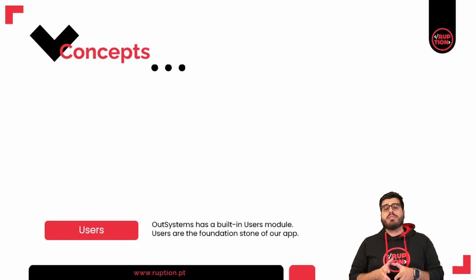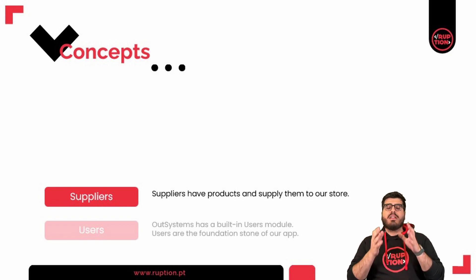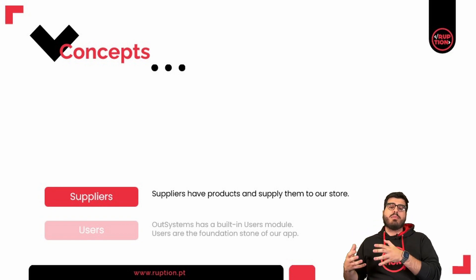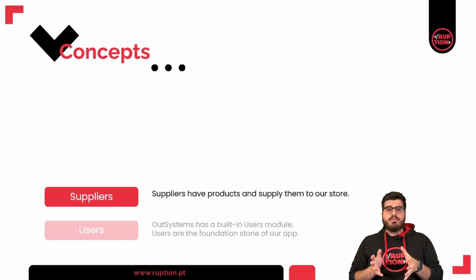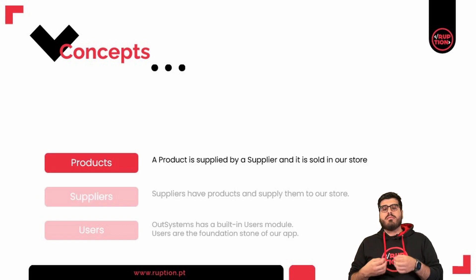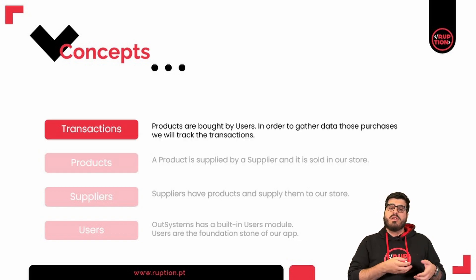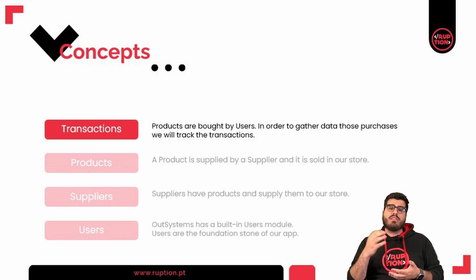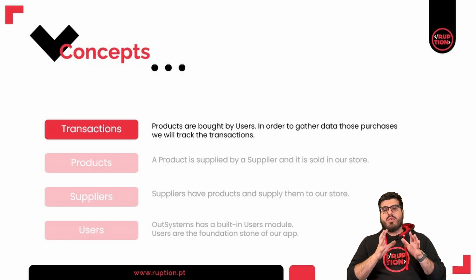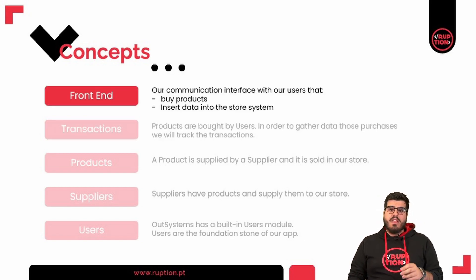Let's focus on products, suppliers, and transactions. A product is something we are going to sell in our store, and these products are supplied by suppliers — the next block of our pillar. Suppliers have products; products are another block of our pillar and products can be bought. To track these transactions and to gather data about our business so that we can improve it, we will have transactions as another core block. The final pillar is the front end, which will need to be built to allow our users to interact with our business and for business users to insert data into the store system.